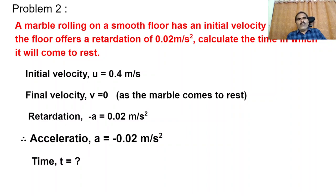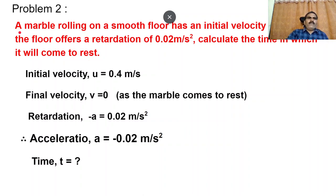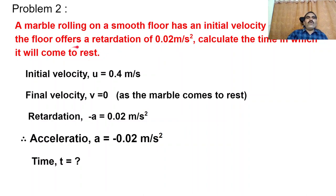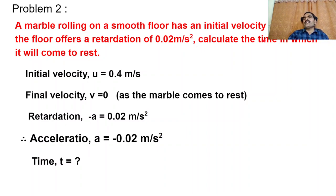In order to understand more, consider another problem. A marble rolling on a smooth floor has an initial velocity of 0.4 meters per second. If the floor offers a retardation of 0.02 meters per second square, calculate the time in which it will come to rest.